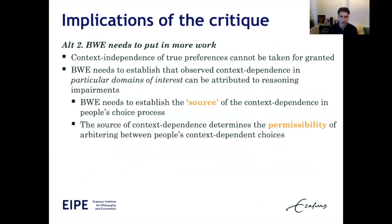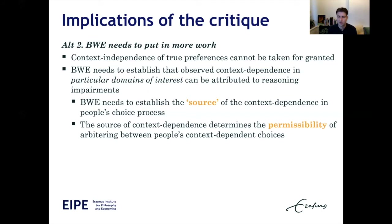Instead, I think the correct conclusion is that behavioral welfare economists need to put in more work to do the welfare judgments they're interested in. The critique shows that context independence of true preferences cannot be taken for granted. Therefore, behavioral welfare economists need to establish that observed context dependence in particular domains of interest — such as the cafeteria example — can be attributed to reasoning impairments. What this means is that behavioral welfare economists need to establish the source of context dependence in people's decision-making processes. This is important because the source also determines the permissibility of picking one context-dependent choice as correct over another.